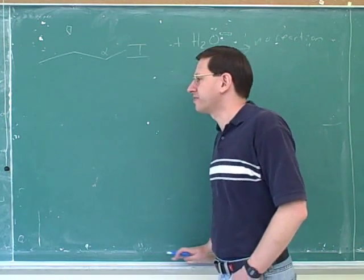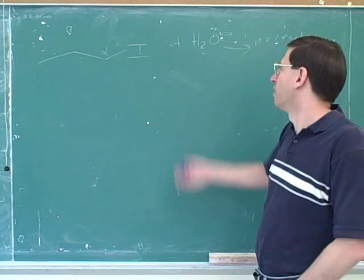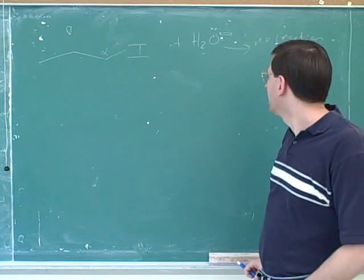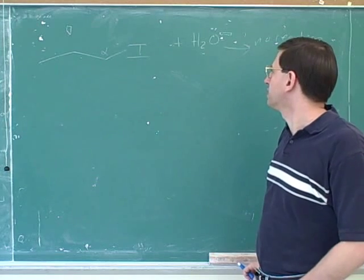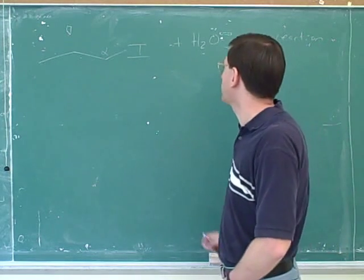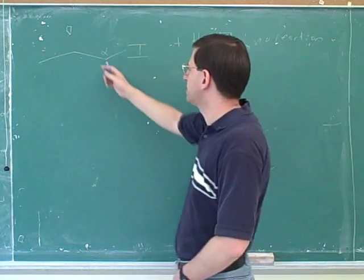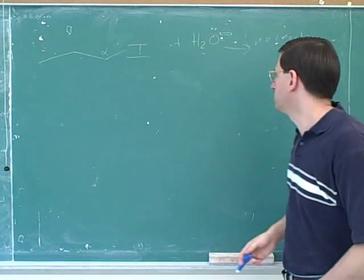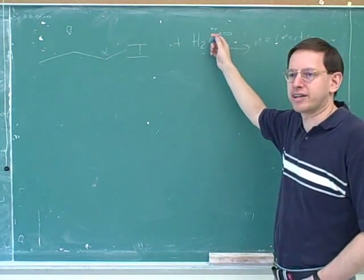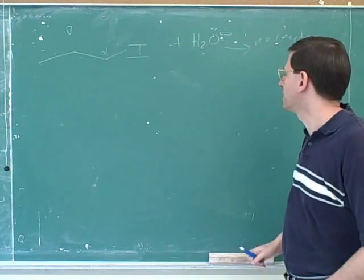So nucleophile quality doesn't matter for SN1 as long as you have something that is a somewhat decent nucleophile like this. Poor is good enough. But for SN2, we need a good nucleophile. So that's why we can't do an SN1 because this is not substituted enough. It's primary. And we can't do an SN2 because you can never do an SN2 with a neutral oxygen.